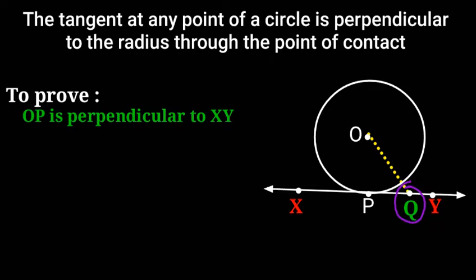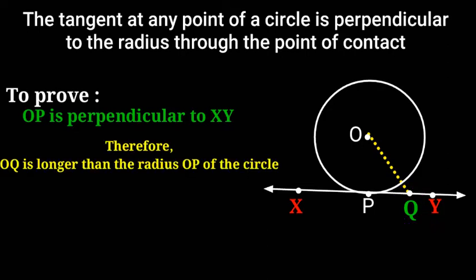If Q lies inside the circle, XY becomes a secant and not a tangent to the circle. Therefore, OQ is longer than the radius OP of the circle, that is, OQ is greater than OP.